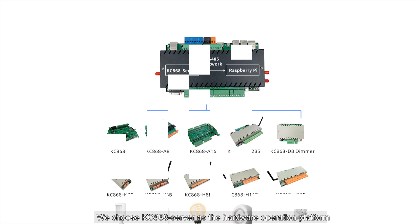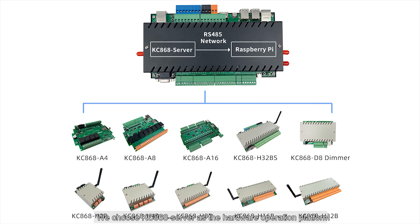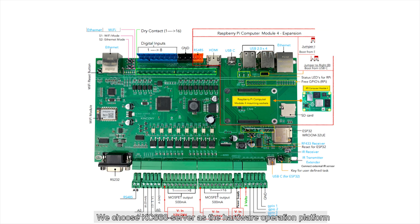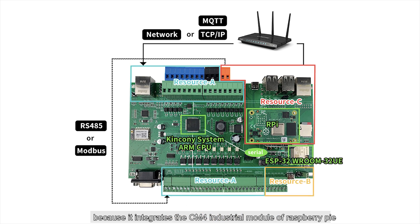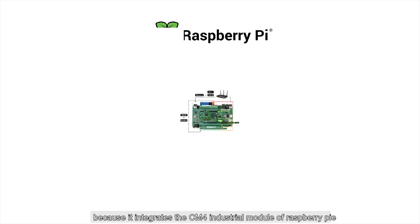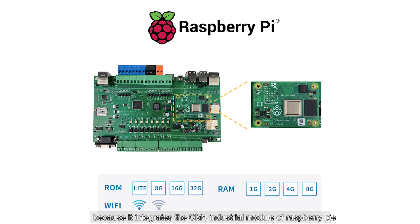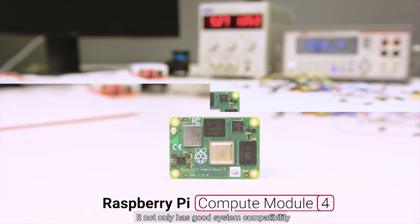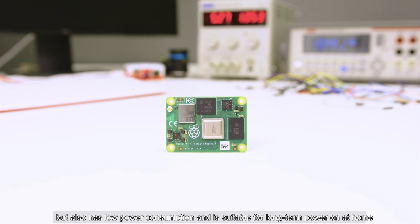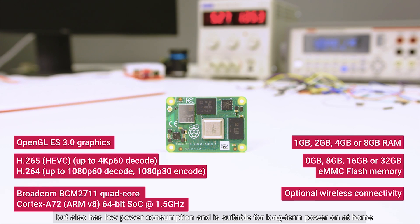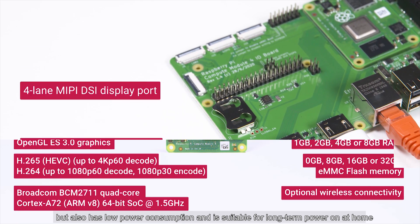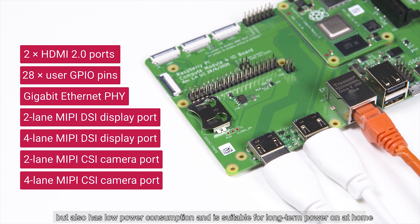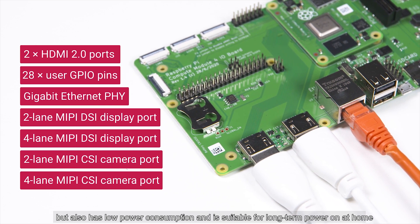We choose the KC868 server as the hardware platform because it integrates the CM4 industry module of the Raspberry Pi. It not only has system compatibility, but also has low power consumption, making it suitable for long-term use in your home.